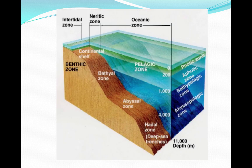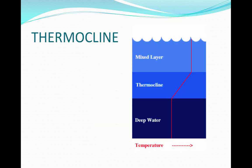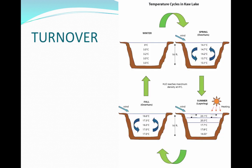In ocean zones, the photic zone is the upper layer where sunlight and photosynthesis occur. The aphotic zone is the lower layer with little light. Together they make up the pelagic zone. The abyssal zone is the lower aphotic zone, roughly 200 to 6,000 meters down. The benthic zone is the bottom where sand and sediment are found, and benthos refers to the community of organisms living there. The top layer of water is warm and the bottom is cold, separated by the thermocline — a layer of abrupt temperature change. Turnover in lakes occurs when oxygenated surface water sinks and nutrient-rich bottom water rises, helping the lake ecosystem.